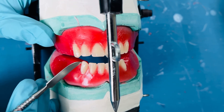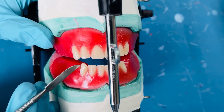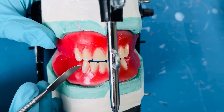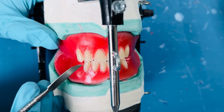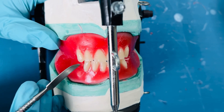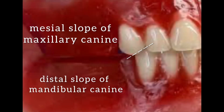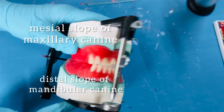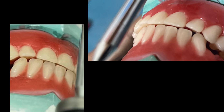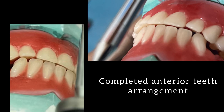The next important thing to verify and confirm is canine relation. In class 1 teeth arrangement, the mesial slope of the maxillary canine should approximate the distal slope of the mandibular canine. Seal the wax around each tooth properly and cool it. That completes the mandibular teeth arrangement. Thank you.